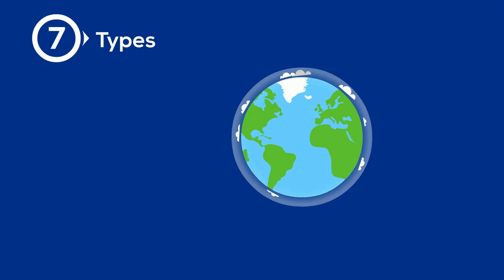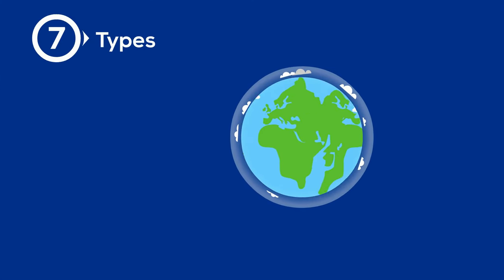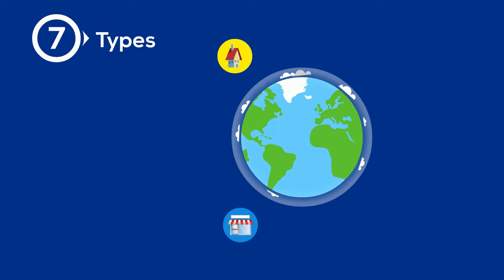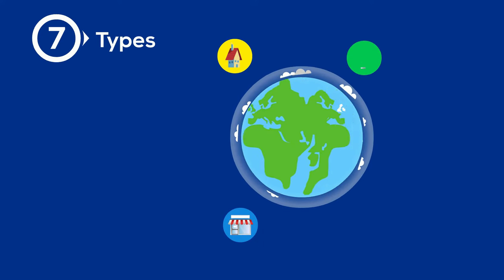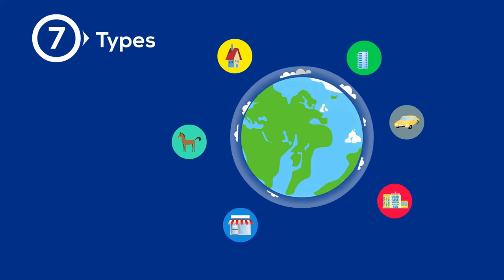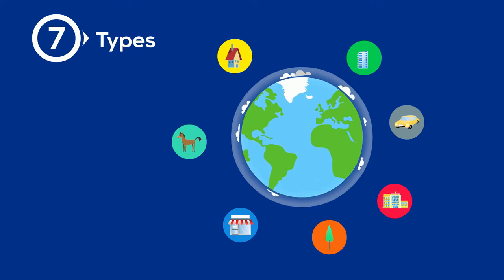There are seven main types of land use. These include residential, commercial, industrial, institutional, agriculture, transportation, and parks and green space.